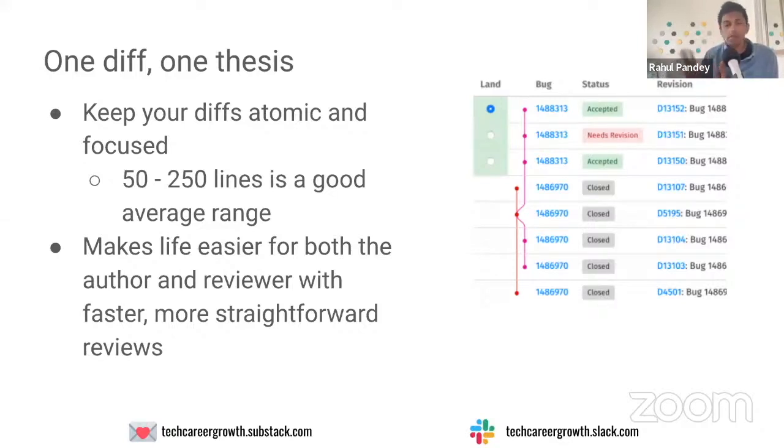As a rule of thumb, this is very much dependent on your team and what kind of change you're making, but I would say 50 to 250 lines of code is a good average for how large your code change should be. What happens is as you start making these changes, these are called stacked diffs or stacked code changes.